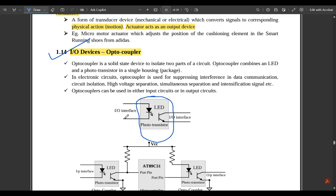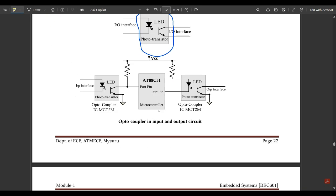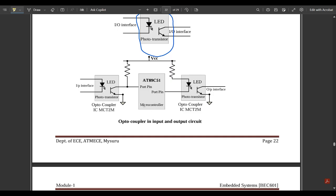In electronic circuits, optocoupler is used for suppressing interference in data communication, circuit isolation, high voltage separation, simultaneous separation and intensification of signals. Optocouplers can be used in either input circuits or in output circuits. This is one simple block diagram where we have one microcontroller with the interfacing part: optocoupler in input and output circuit.